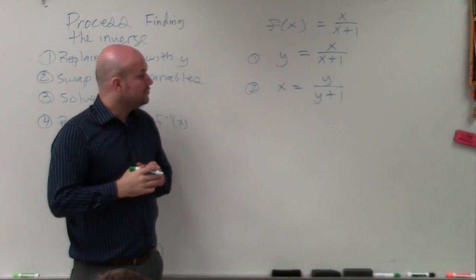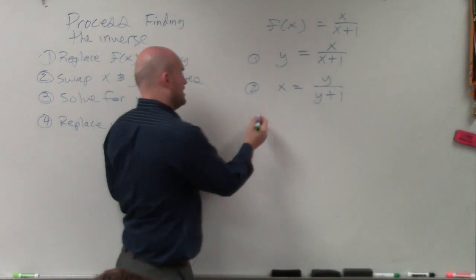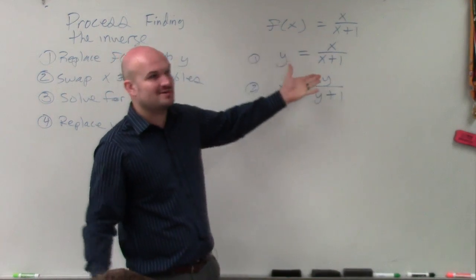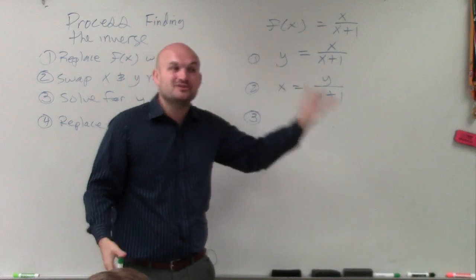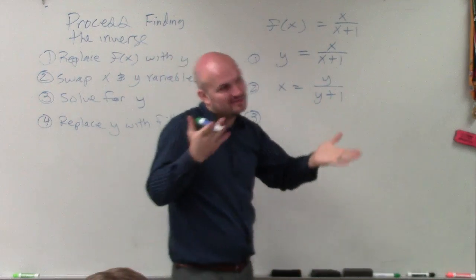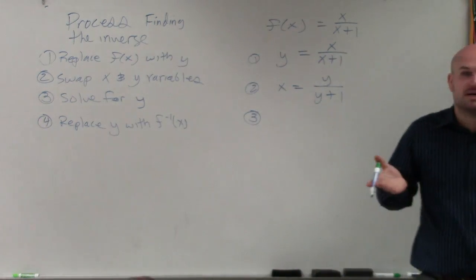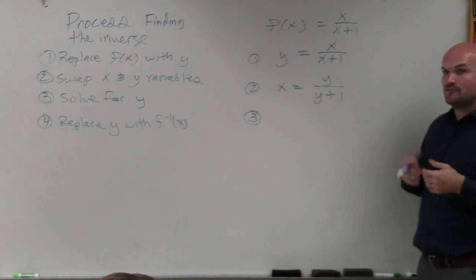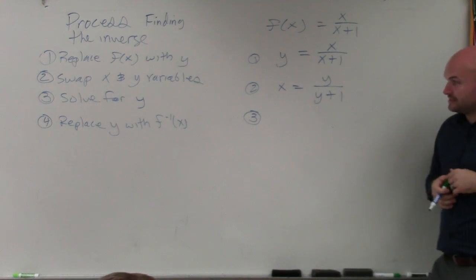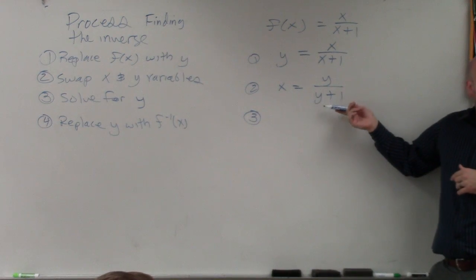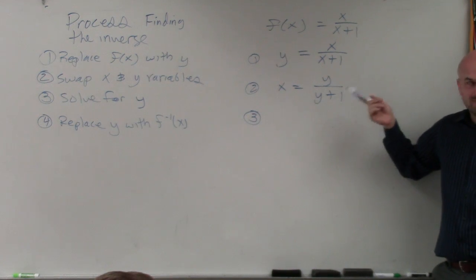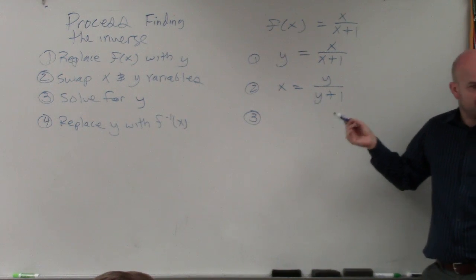Now I need to solve for y — step number three. These first two steps everybody should be able to do. The third step is where it's going to get difficult for some problems and easier for others. So how do you solve for y in a problem like this? Any time we have a y in the denominator, or a variable in the denominator that we want to solve for, we have to get that variable off the denominator.